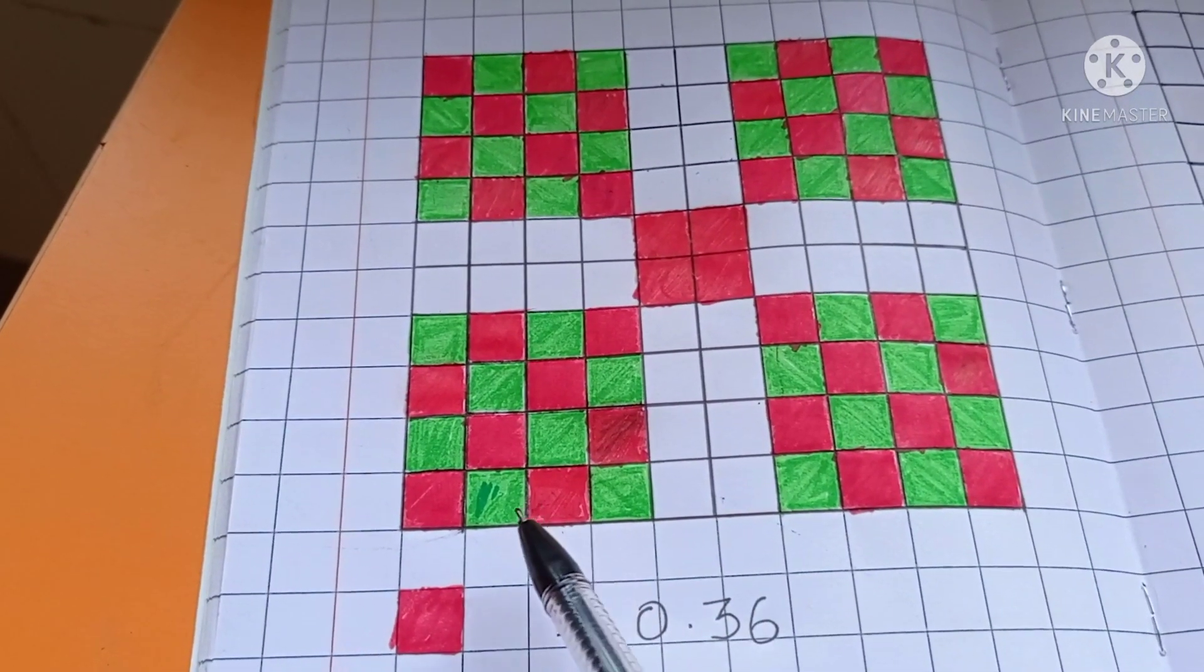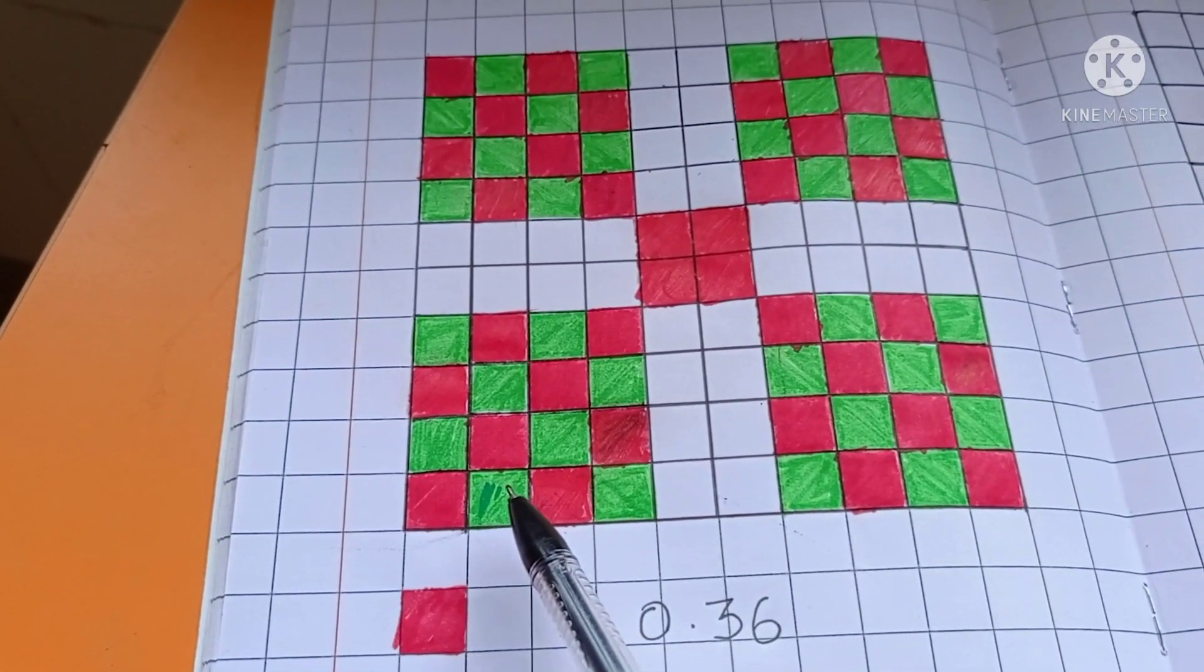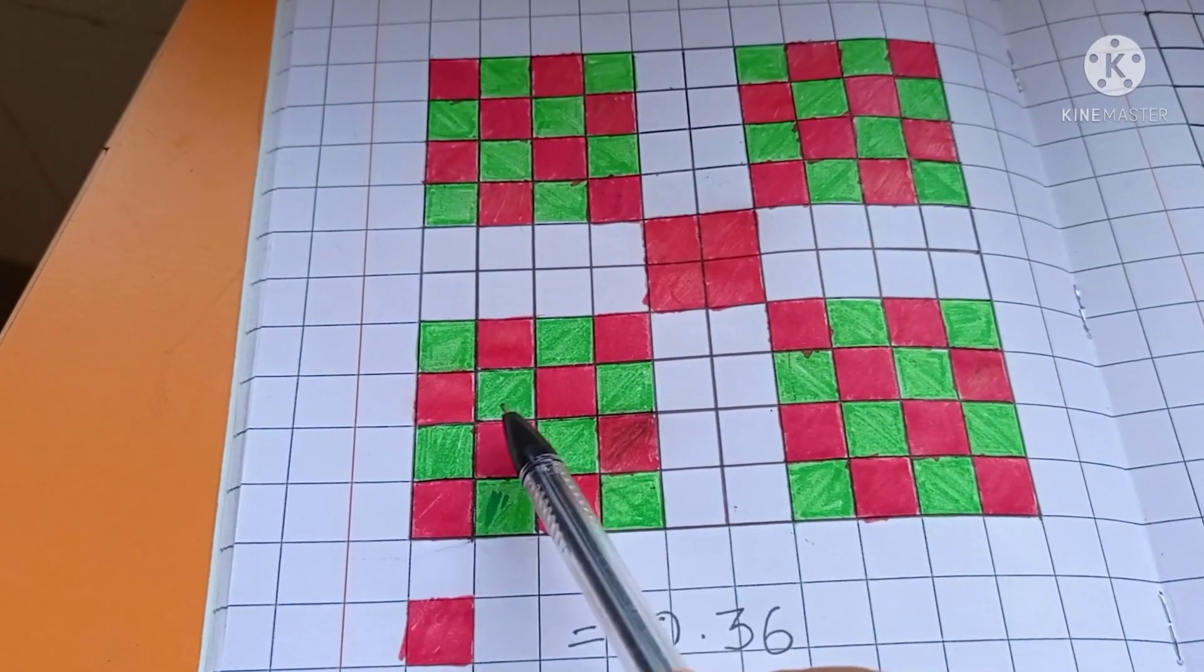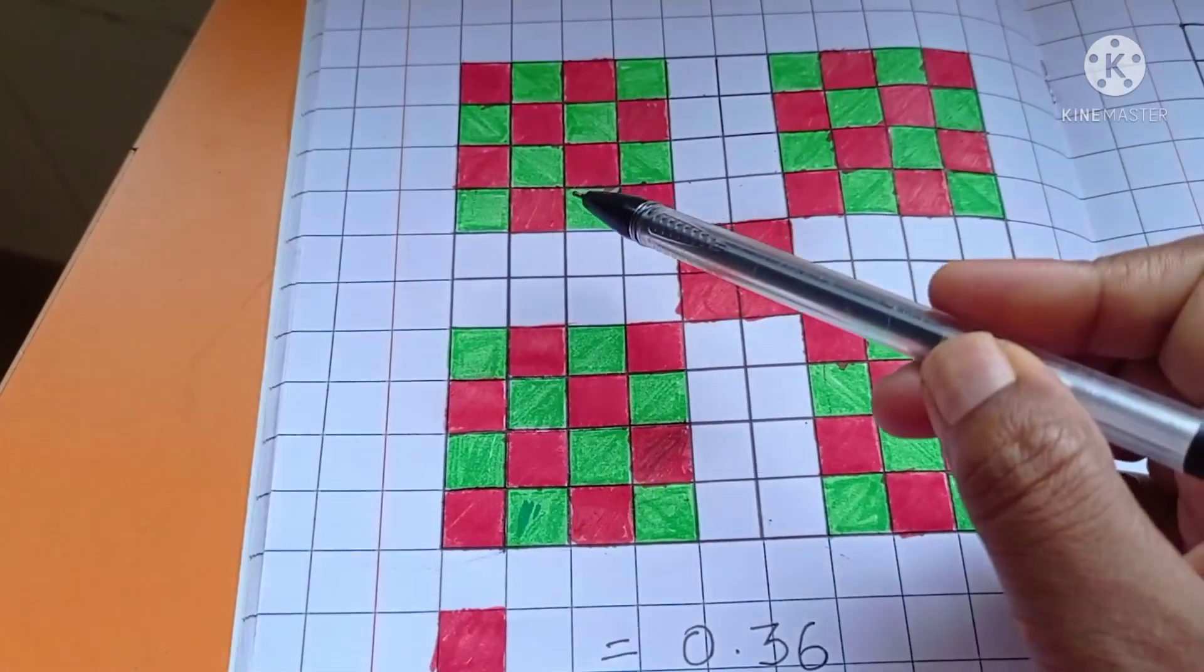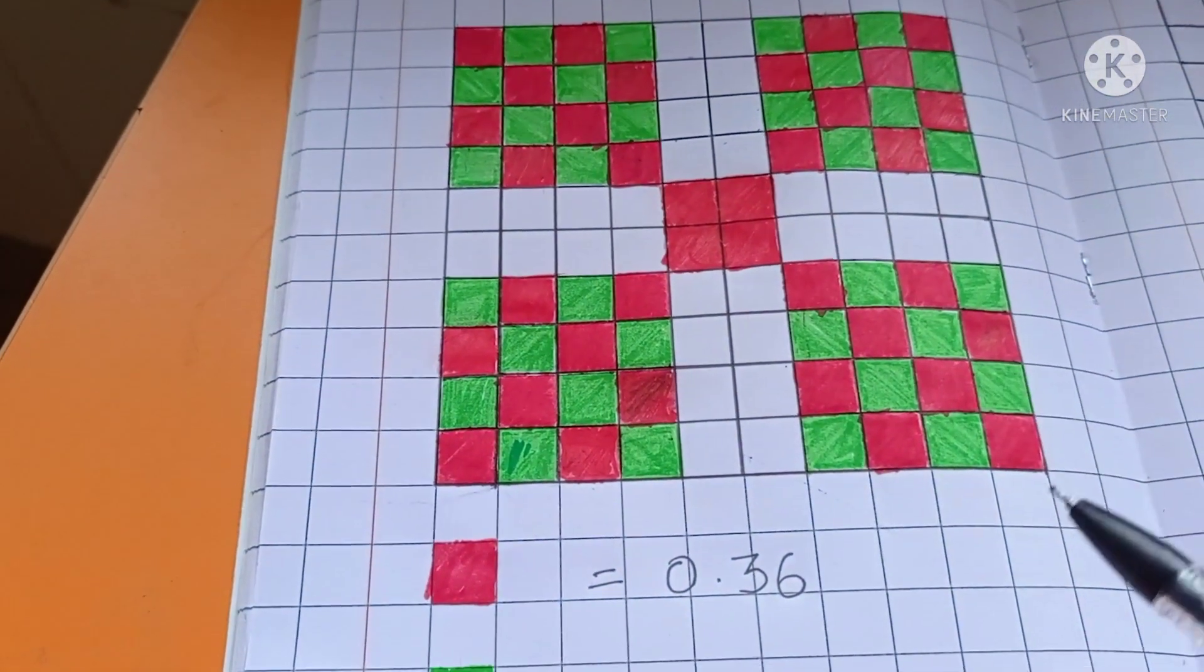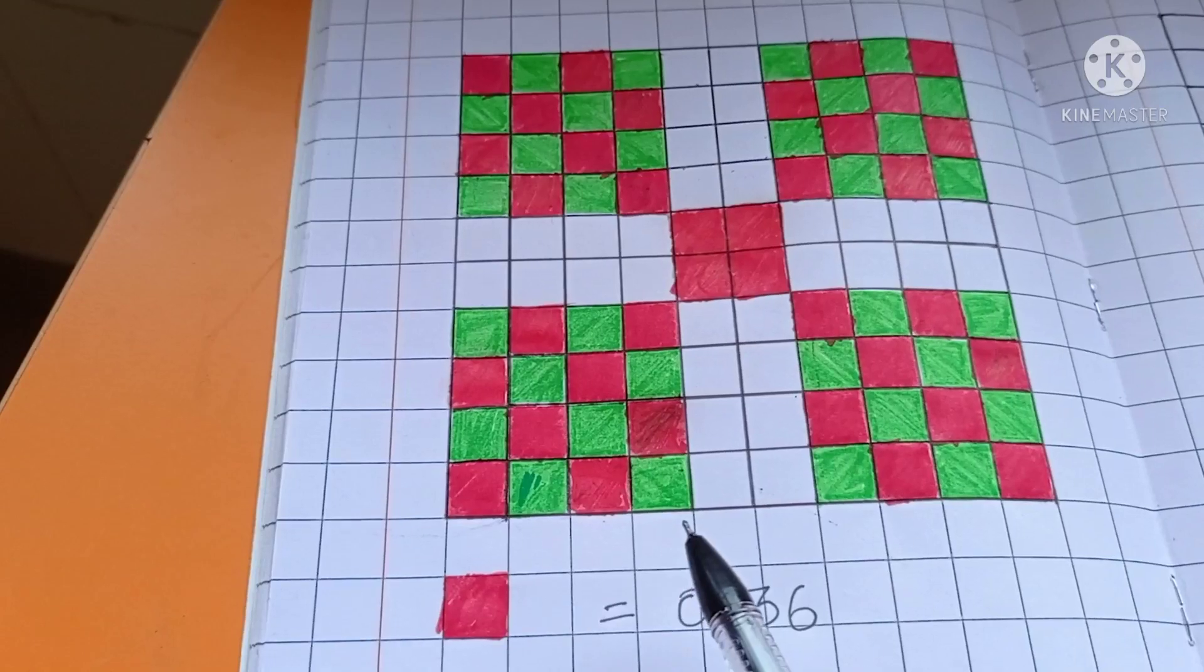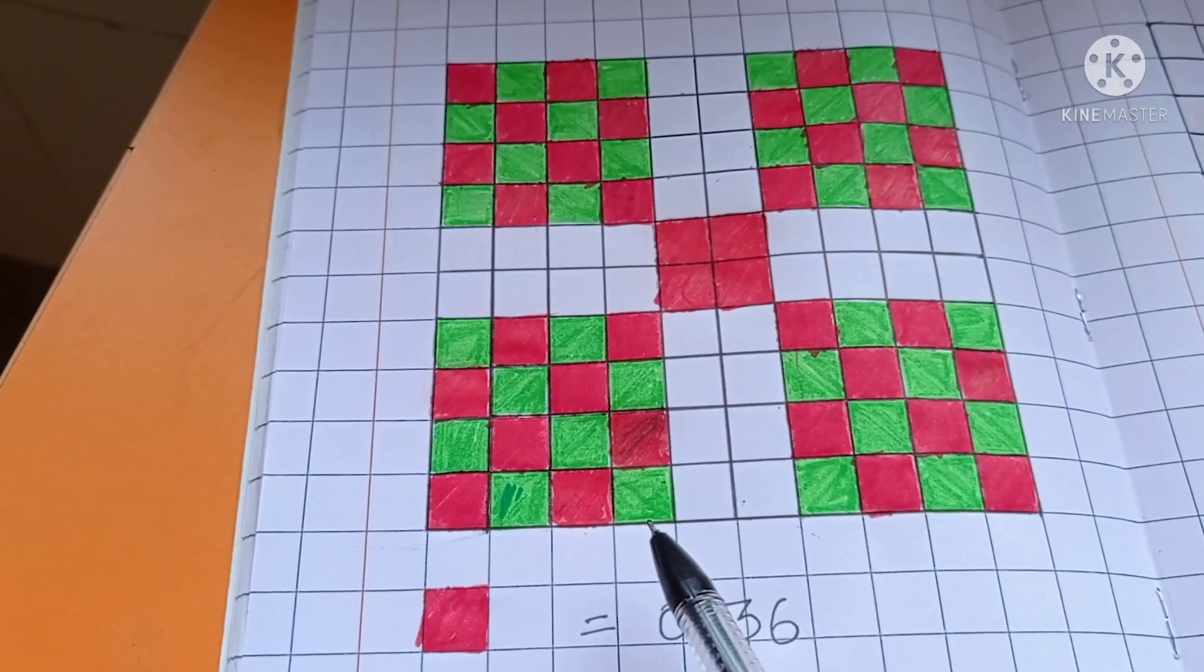Next, green color squares. 1, 2, 3, 4, 5, 6, 7, 8. Eight plus 8 plus 8. Four 8's are 32. So green color part, shaded part 32.